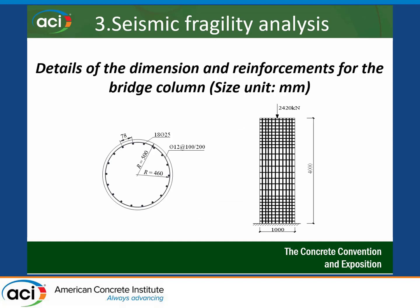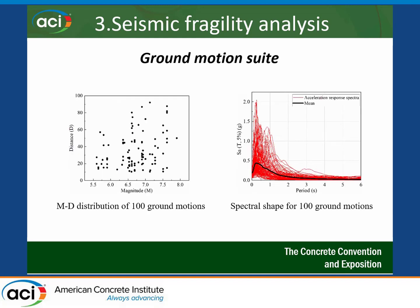This shows the details and dimensions of the bridge pier used for the fragility assessment: a 500-millimeter diameter concrete column, 4 meters long, with an axial load of 2400 kilonewtons. The column was subjected to 100 different ground motions collected from the PEER ground motion database, with magnitudes ranging from 5.5 to 7.5 moment magnitude. Only far-field ground motions were considered in this study.